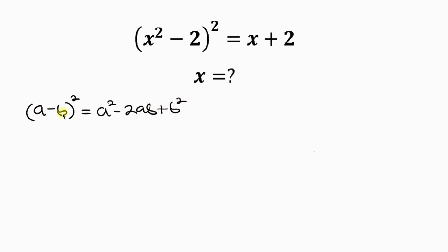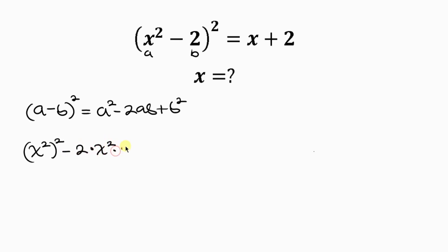When we compare, we see that a = x² and b = 2. Now we're going to expand in this form. So we have (x²)² — that is a² — minus 2 times x² times 2 — that is 2ab — plus 2² — that is b². This equals x + 2 on the right-hand side.